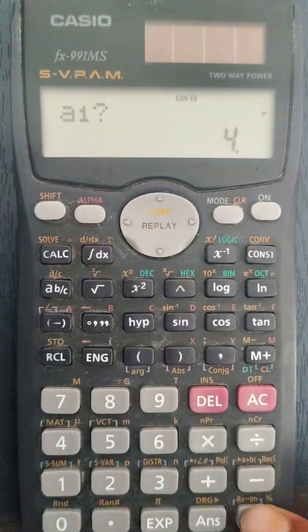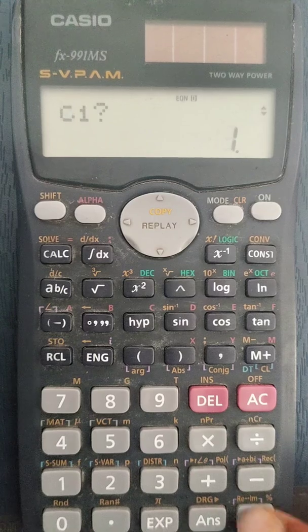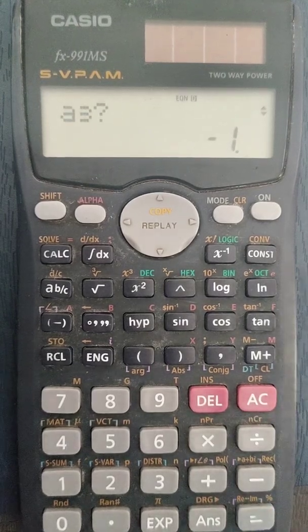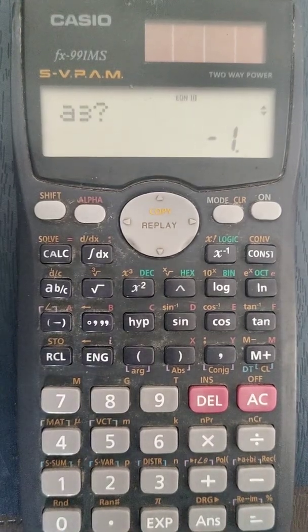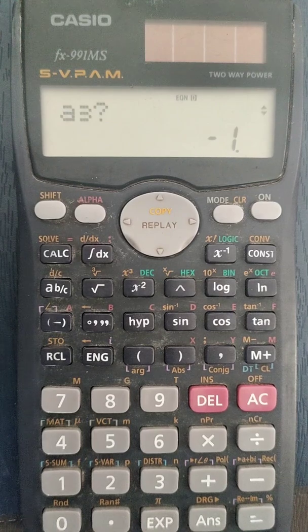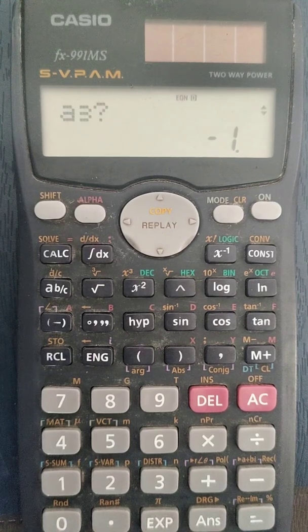Again, if you want to enter different values, you can again by clicking equal to sign, you can enter the different values to get the solution for some different equation. So this is how you solve the 2 unknown and 3 unknown variables in 991 MS.